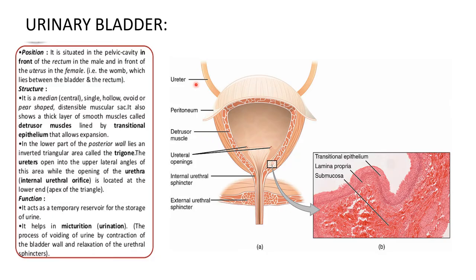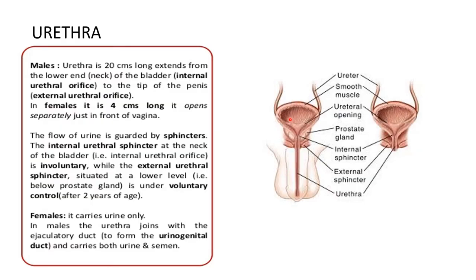The ureter opens into the bladder, which is a triangular-like structure. At the apex or upper end there are two openings known as ureteral openings, which carry urine from the kidney to the urinary bladder. At the bottom center there is an opening known as the urethral opening. There are internal and external urethral sphincters which help in expansion of the bladder when urine enters. Micturition — the process of voiding urine — occurs by contraction of the bladder wall and relaxation of the urethral sphincter.